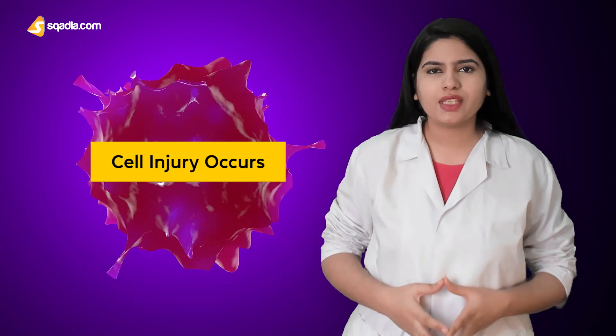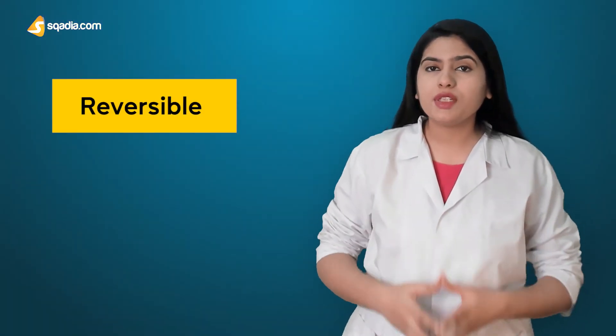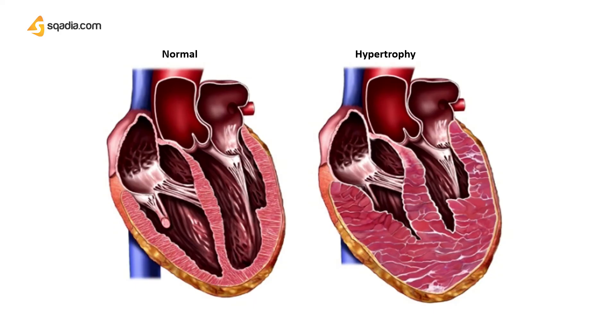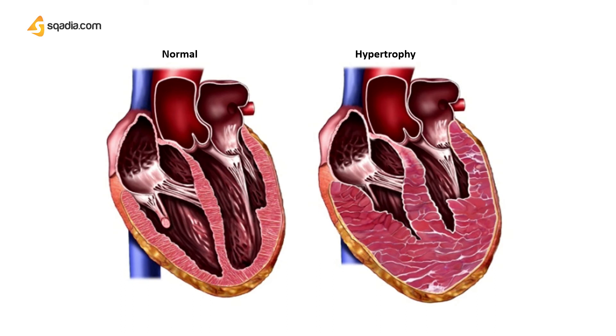When this limit is exceeded or if the stress is highly noxious, cell injury occurs. Cell injury can be reversible or irreversible; irreversible injury leads to cell death. Take the example of heart muscles during hypertension. See the muscles in the normal heart and the one under the stress of hypertension. To deal with the increased load, the myocytes increase in size. But when this condition persists, the myocytes can be injured or undergo cell death, causing heart failure. Let's elaborate on this example in the next section on hypertrophy.